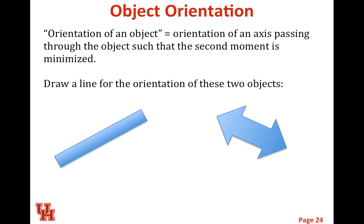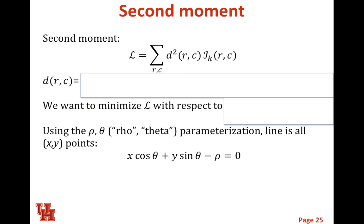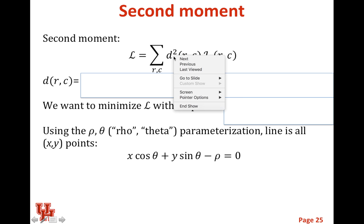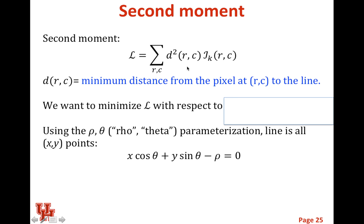Now we need to talk about object orientation. The orientation axis is the axis that passes through the object that minimizes the second moment — the distance squared. The central moment L is defined as the second moment: a squared relationship of our RC times our indicator function, where D is our distance metric. It's the minimum distance from the pixel at location RC to the line. We want to minimize this quantity L to find our dominant axis.